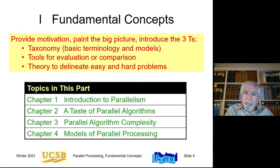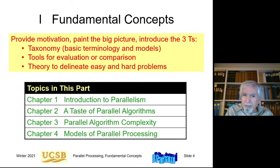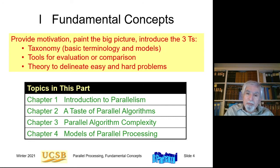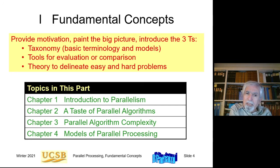Let's get started on part one in the textbook, which consists of four chapters. Today we will cover chapter one, Introduction to Parallelism. It gives us basic terminology and ideas about what parallel processing is, why it is important, and other things we need to know to understand the rest of the course.